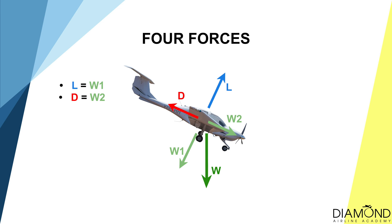Just to do a small recap: weight is split into two portions, weight 1 and weight 2. Weight 1 is balanced by lift, and weight 2 is balanced by drag. This diagram tells us that in a descent there will be no net forces — we call this equilibrium.